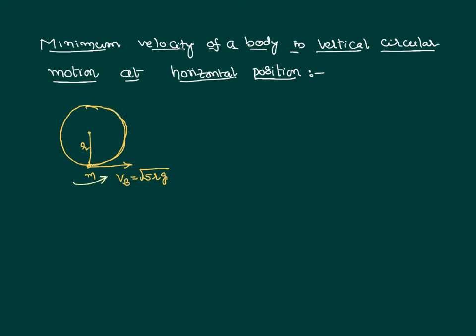As the body moves in circular motion, its velocity will keep changing. We want to know what is the velocity when the body is in the horizontal position. The velocity at any point is always tangential. The string length is also equal to r. So if at the bottom the body is moving with a minimum velocity, what is the velocity at the horizontal position? This is what we would like to calculate.